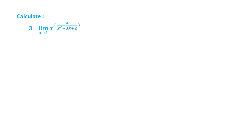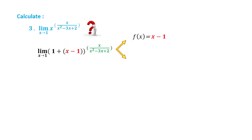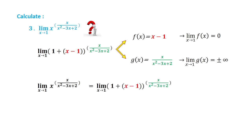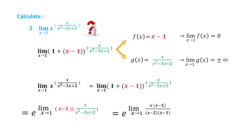Number 3: Two limits such that f(x) equals x minus 1, and g(x) equals x to the 4th times x squared minus 3x plus 2. The result is e ranked minus 1.